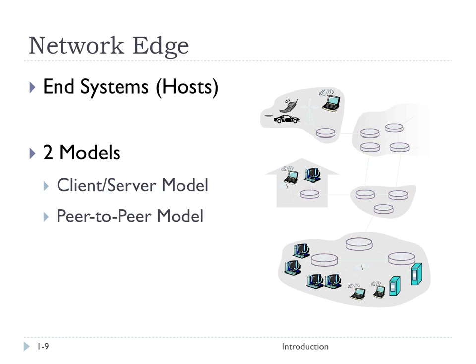There are basically two models of communication we'll come back to throughout this class. One is the client-server model. In the client-server model, there's a server that's very stationary and always on, that provides some resource or service for a client. The client may not always be connected, may be changing networks or changing location. A classic example is the web — clients are web browsers, servers are web servers. Things like Chrome talking to Apache through a client-server model.